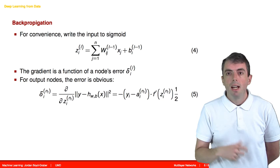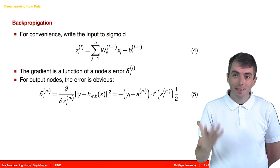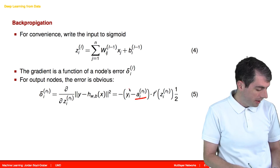For the final output node, the error is the difference between what your model output and what the right answer should have been. So this makes total sense as the error.